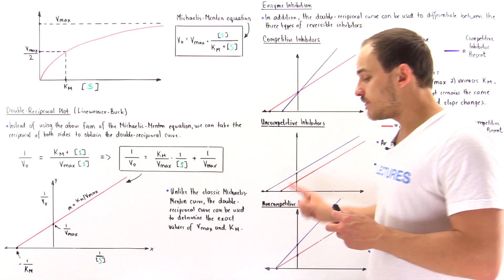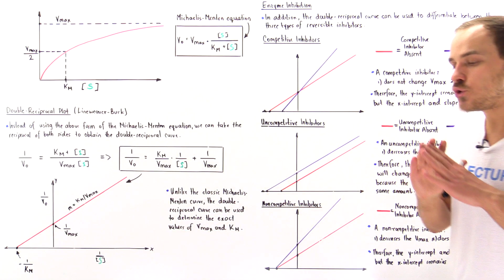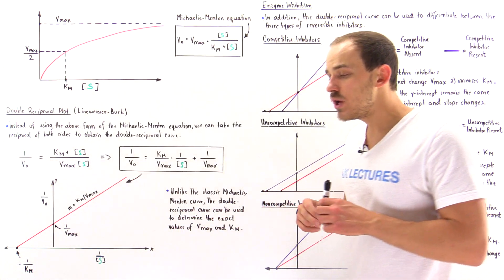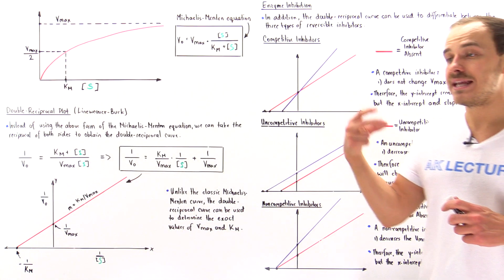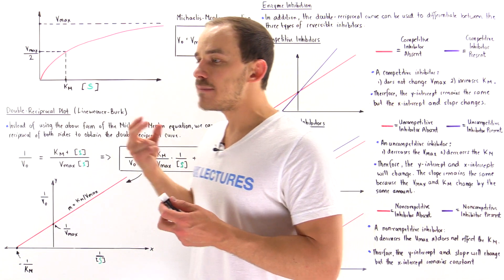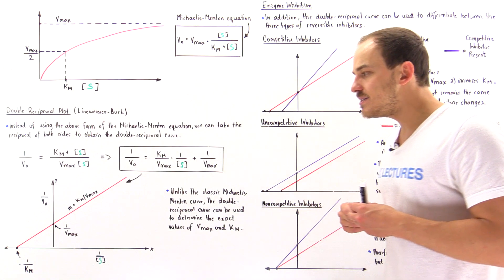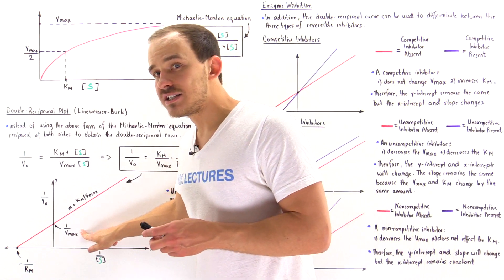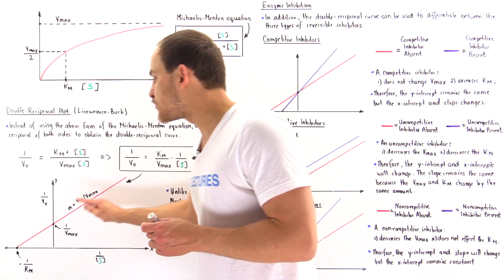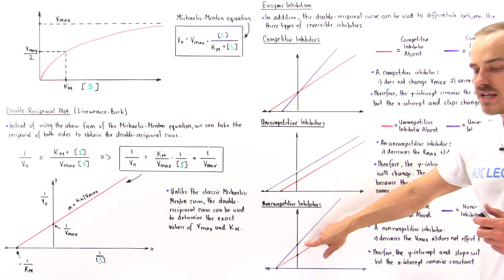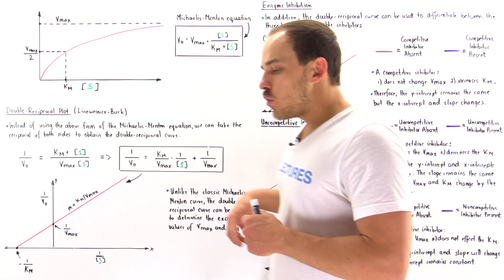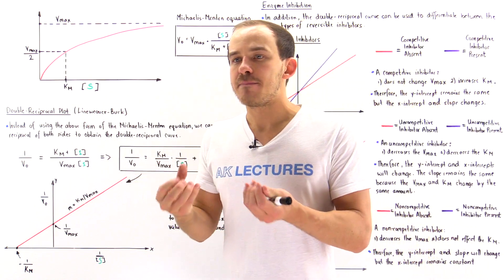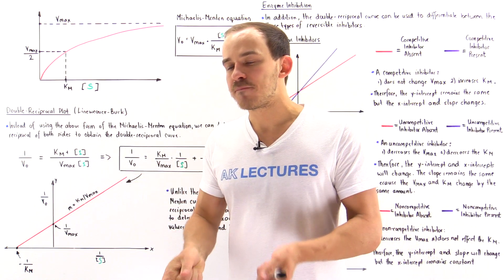This is because a non-competitive inhibitor binds onto the enzyme regardless of whether the substrate is bound — it can bind onto the free enzyme or onto the enzyme-substrate complex. This decreases Vmax, so 1/Vmax increases, making the y-intercept greater, as we see in this case. Even though the non-competitive inhibitor changes the shape of the active site, the substrate's affinity is not affected.